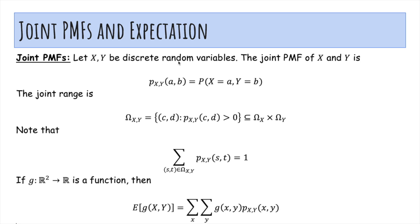So if X and Y are discrete random variables, the joint PMF of X and Y is this, as we said. The joint range is the set of values (c,d) where the probability of X equaling c and Y equaling d is strictly greater than zero, so it's possible. And note that if we sum over the entire rectangle, then we get 1, the sum of the probabilities.